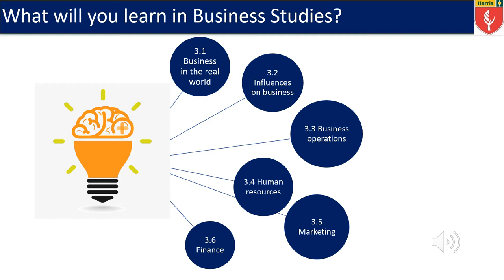3.5, we look at marketing, and here we look at the marketing mix — so price, place, promotion, and product. And last but not least, we look at finance. Finance includes ideas of cash flow, financial calculations, as well as analysing financial performance.